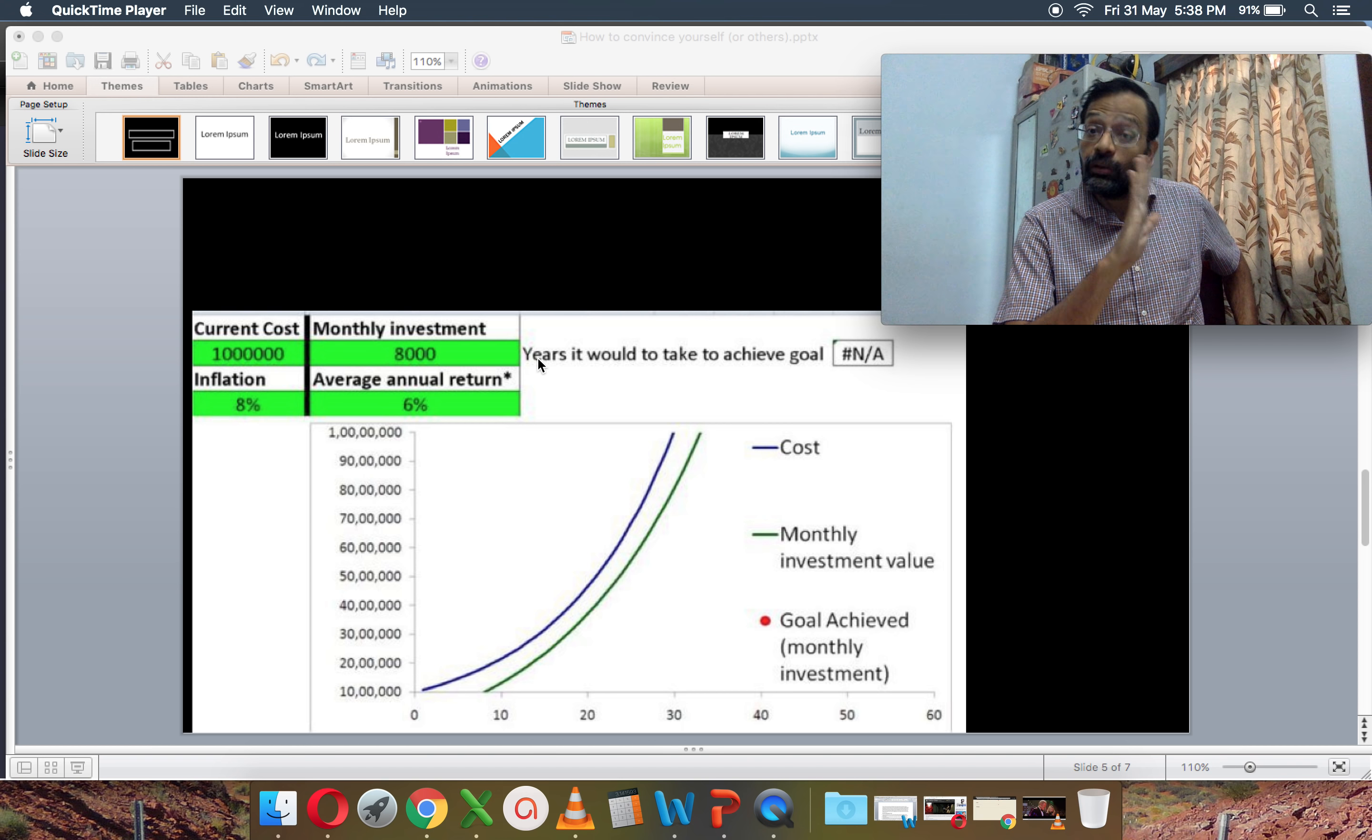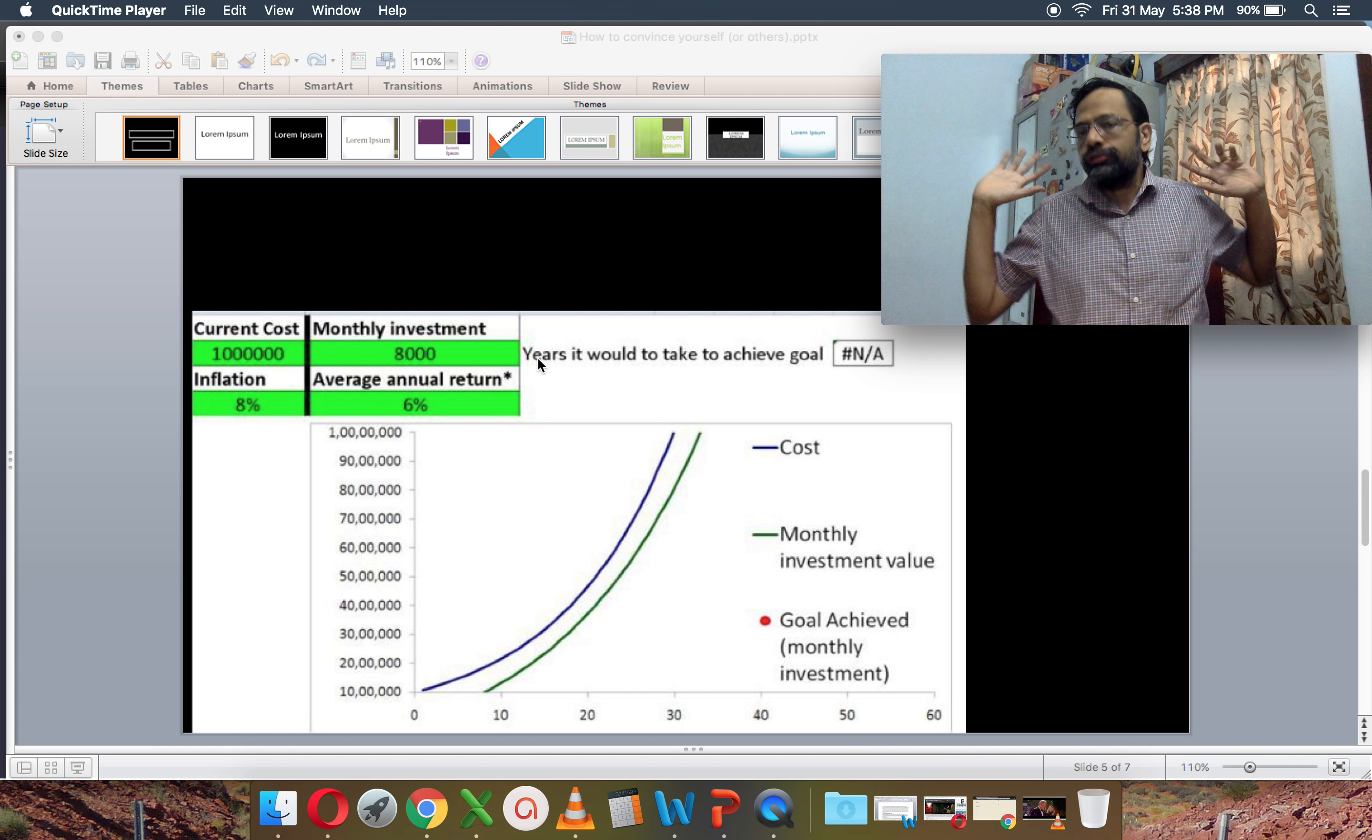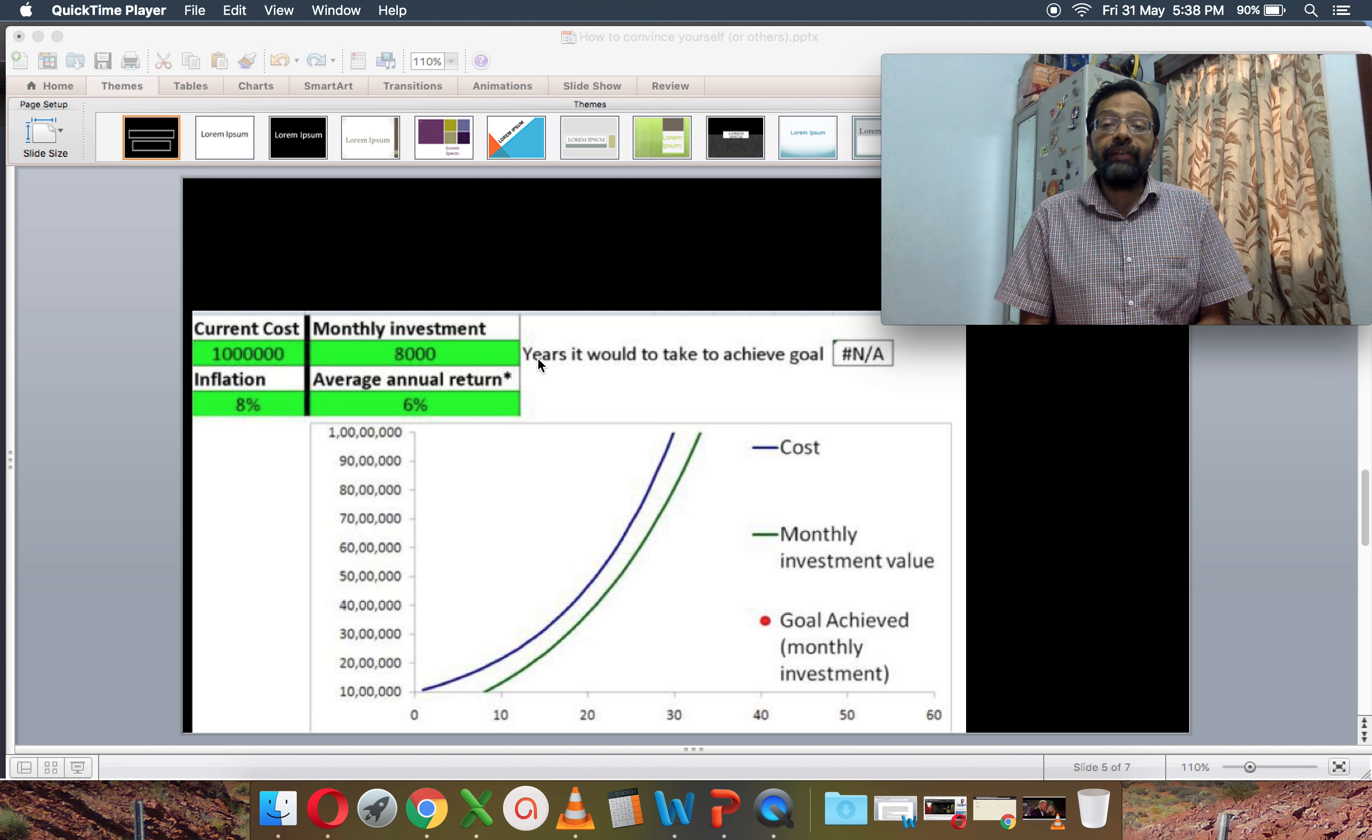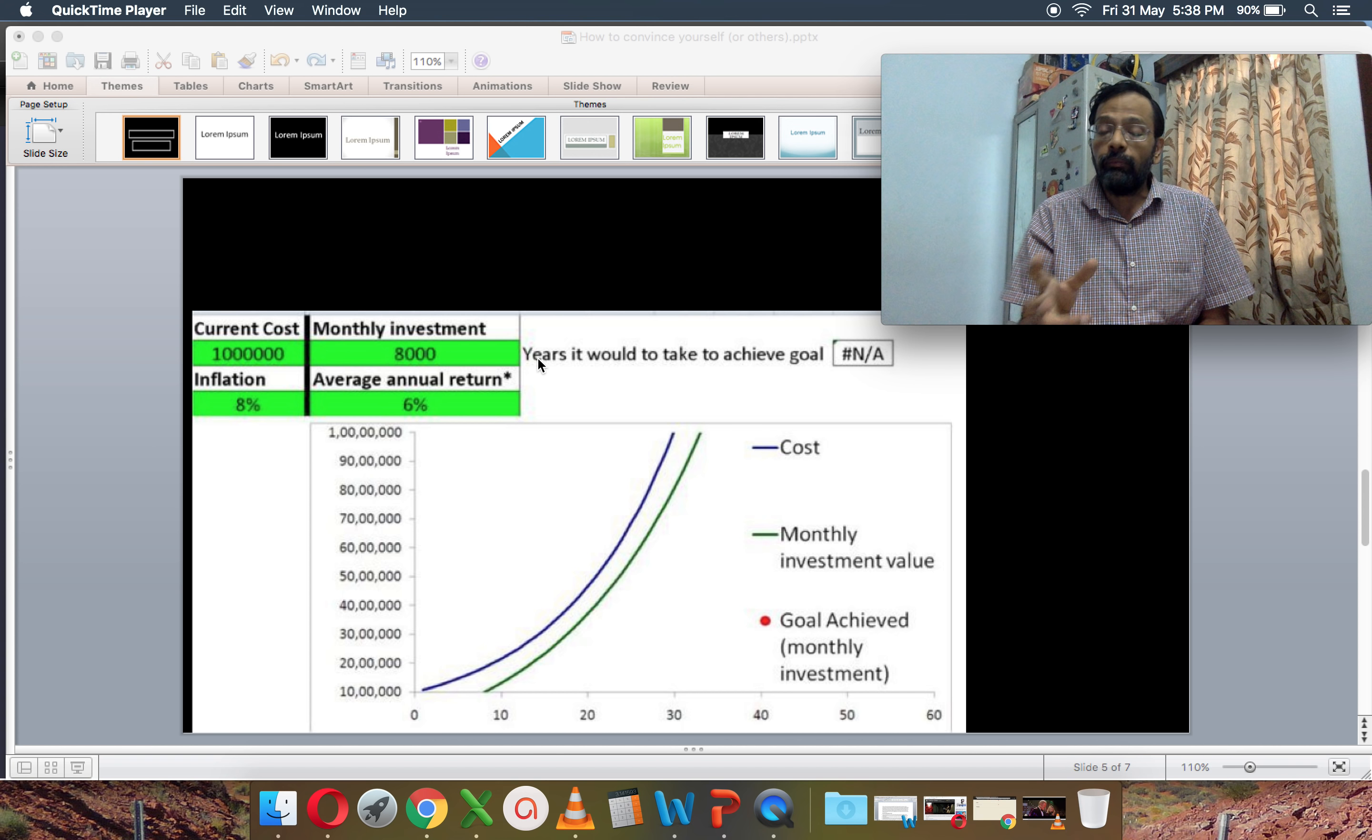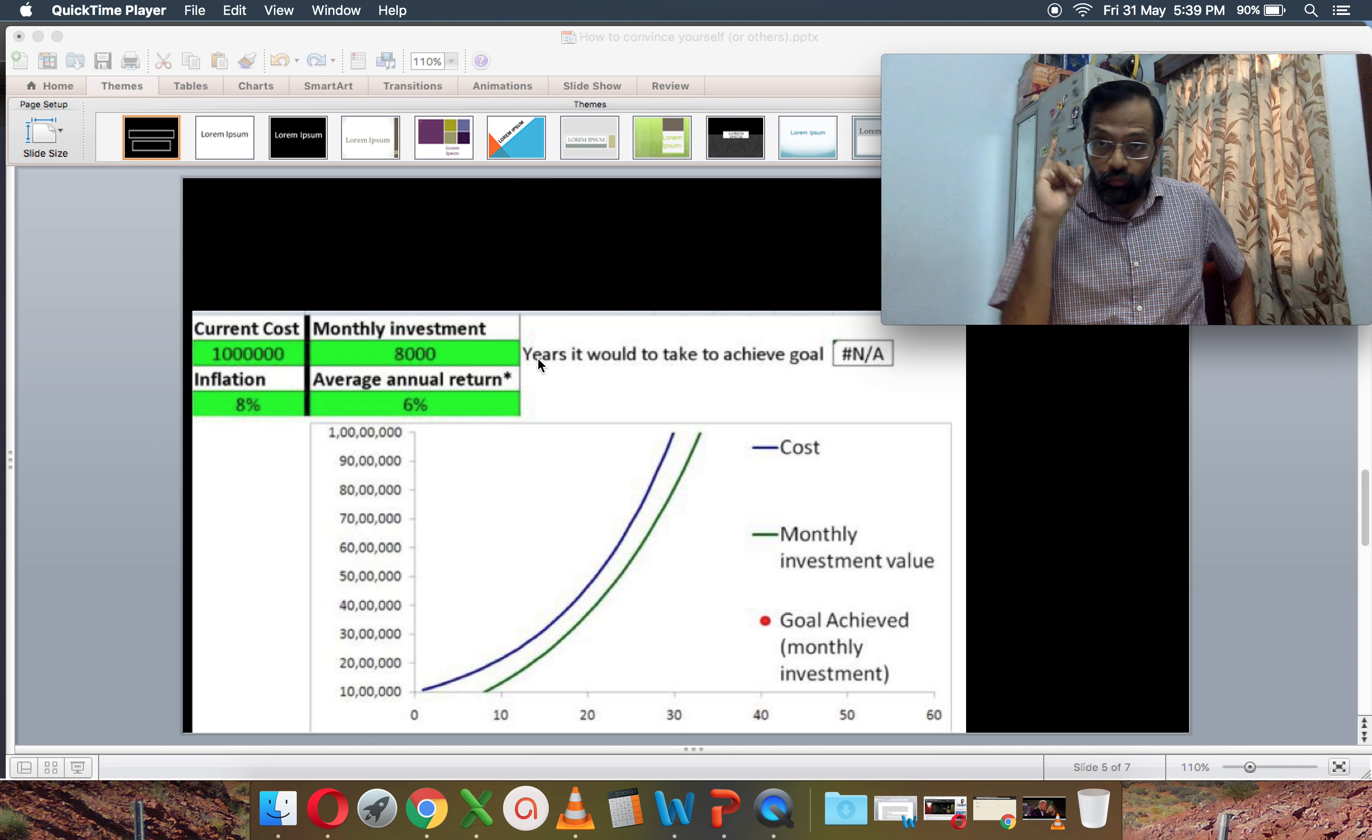So one more example, 10 lakhs current cost, 8% inflation, the annual return is now 6%, so minus 2% real return approximately. The monthly investment is only 8,000. So this person says, I will be only in fixed income, but I can only increase my investment to 8,000. That's all I can do. Then notice that the green line never meets the blue line. The investment value will always be lower than the cost, the cost of the service or commodity one desired, and therefore, the person will never be able to achieve their goals.